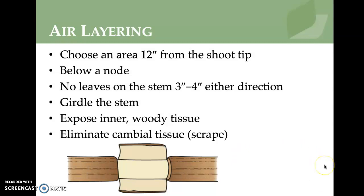For air layering, you choose an area 12 inches from the shoot tip, below a node with no leaf on the stem, leaving three to four inches in either direction. Then you perform girdling — exposing the inner woody tissue and eliminating the cambial tissue by scraping it.